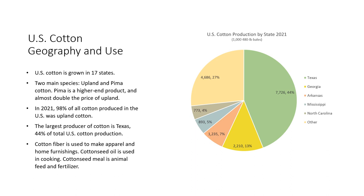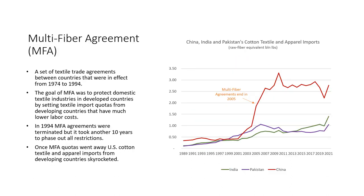Cotton plants produce cotton fibers, cottonseed oil, and meal. Oil is used in human consumption for cooking; meal is used for animal feed and fertilizer. I will spend the next minute explaining the Multi-Fiber Agreement (MFA), knowledge of which will be important later in the presentation. The MFA refers to a set of textile trade agreements between countries that were in effect from 1974 to 1994.